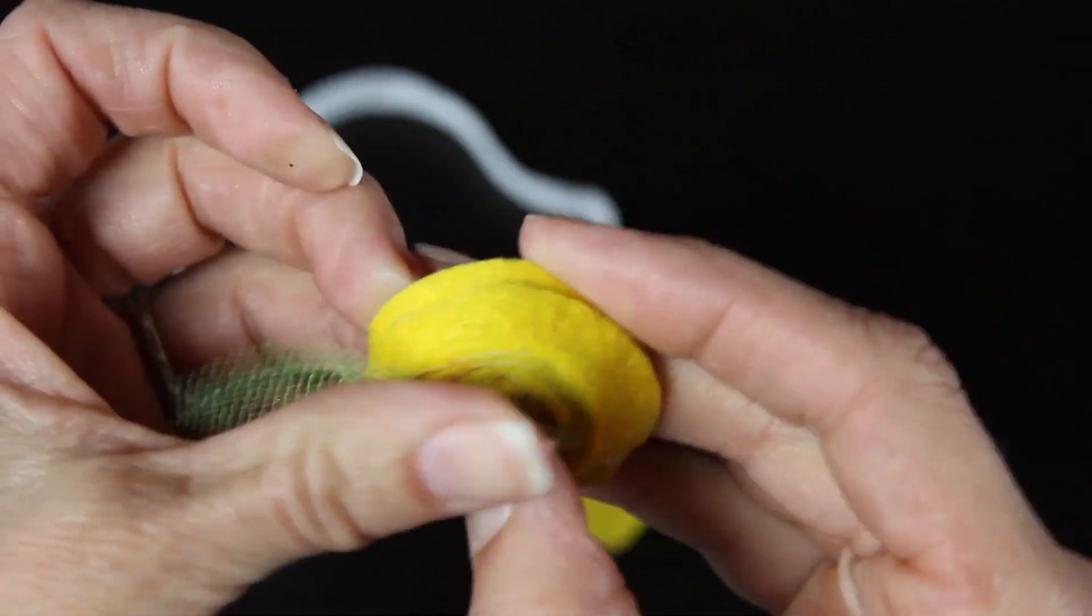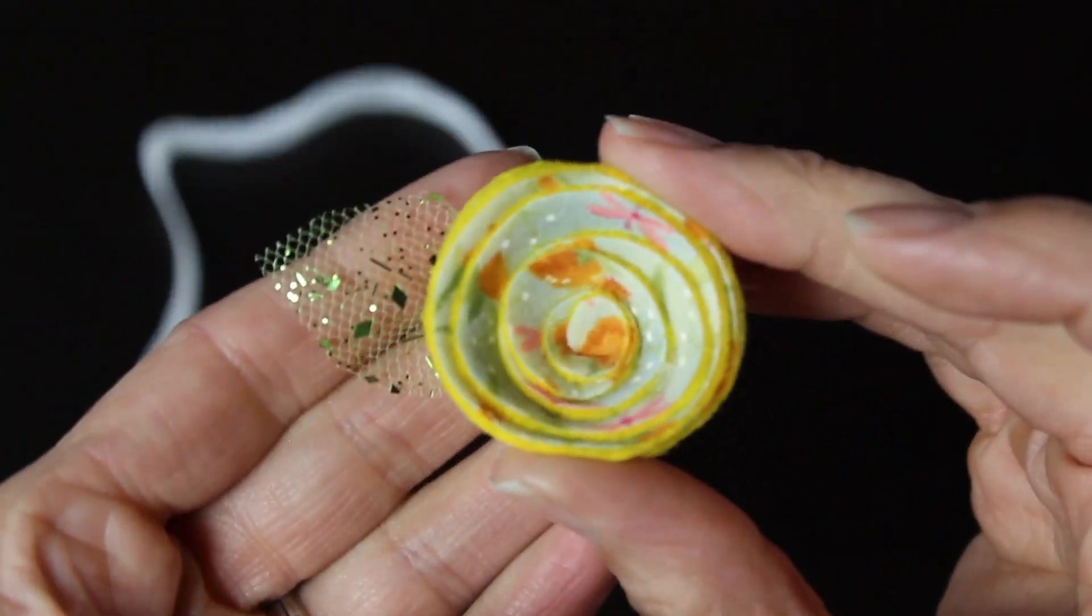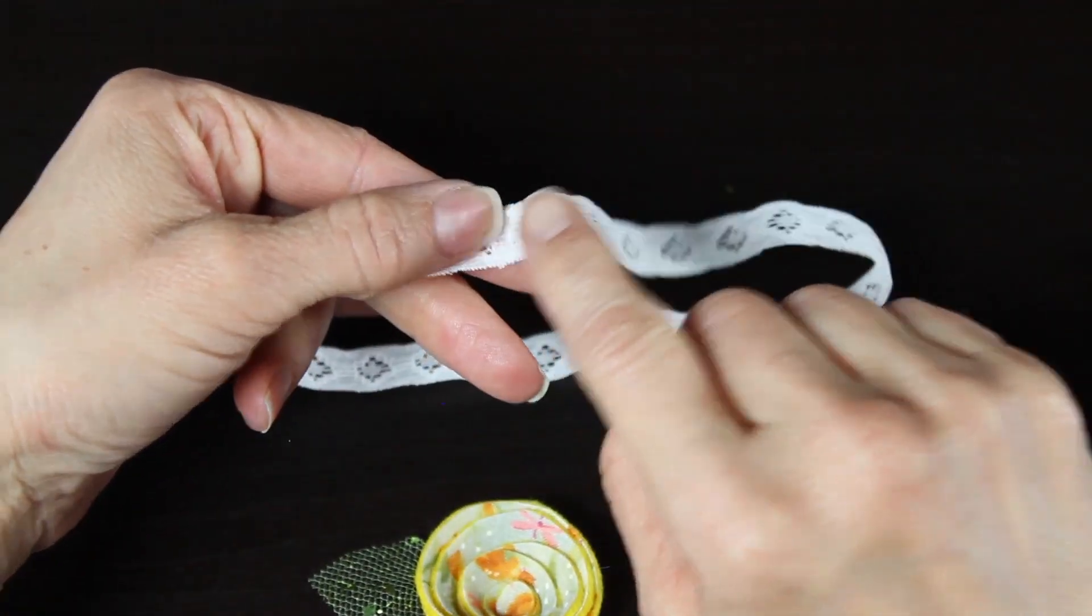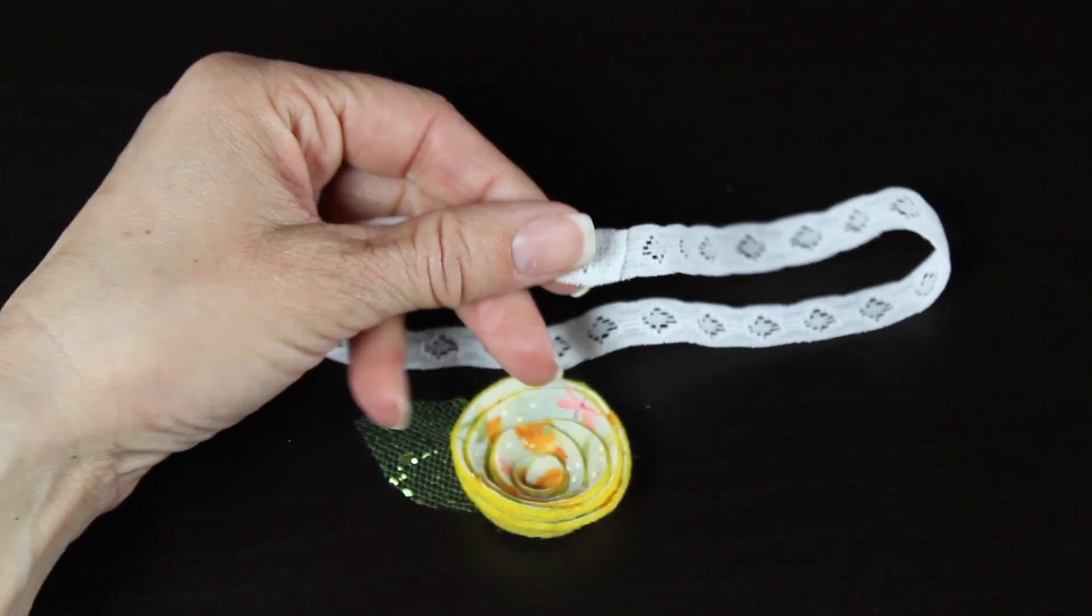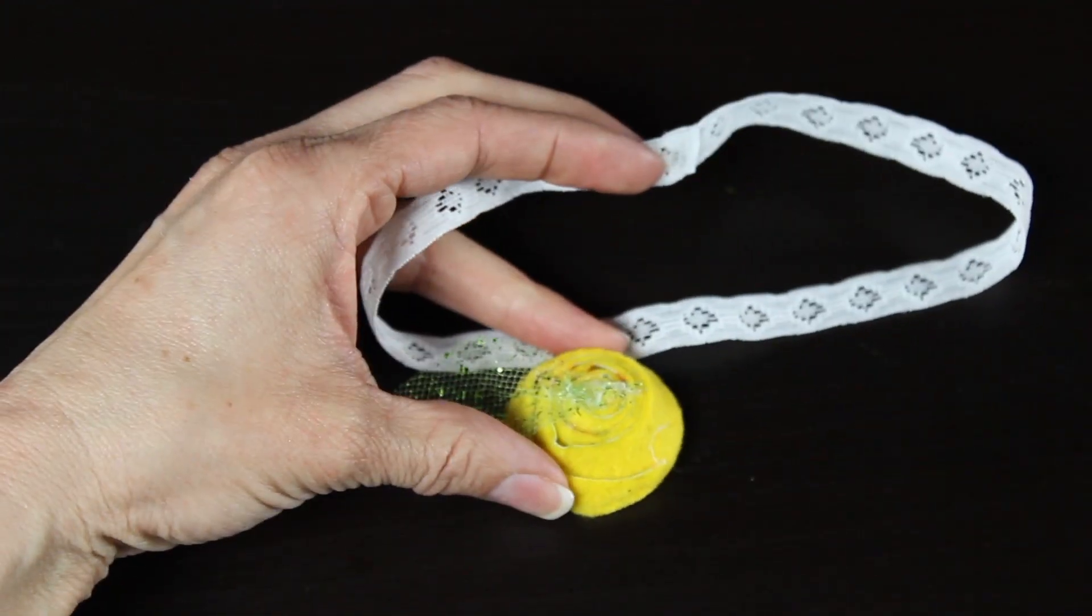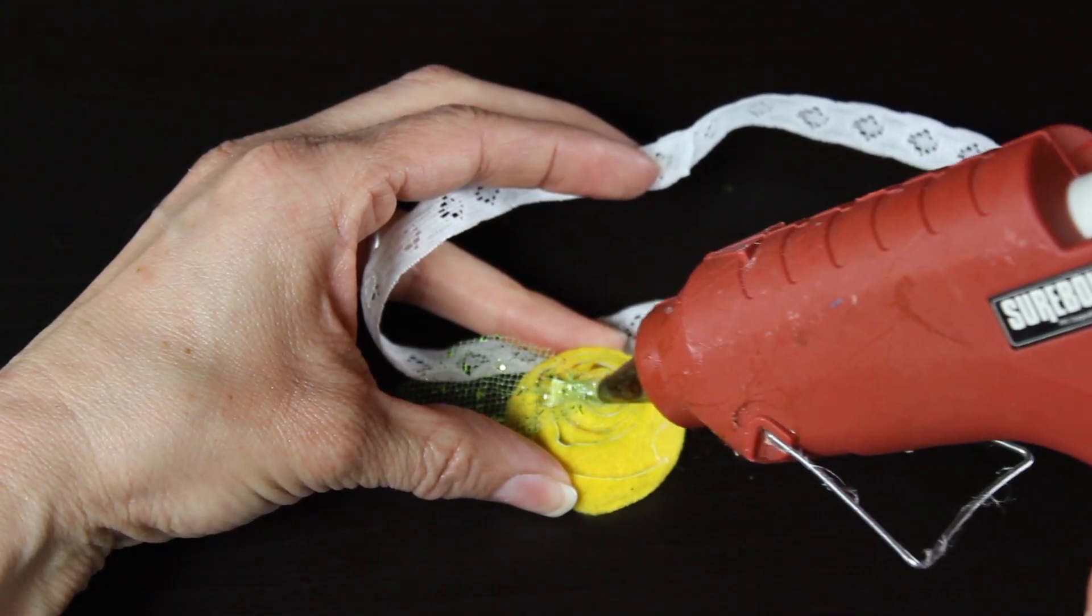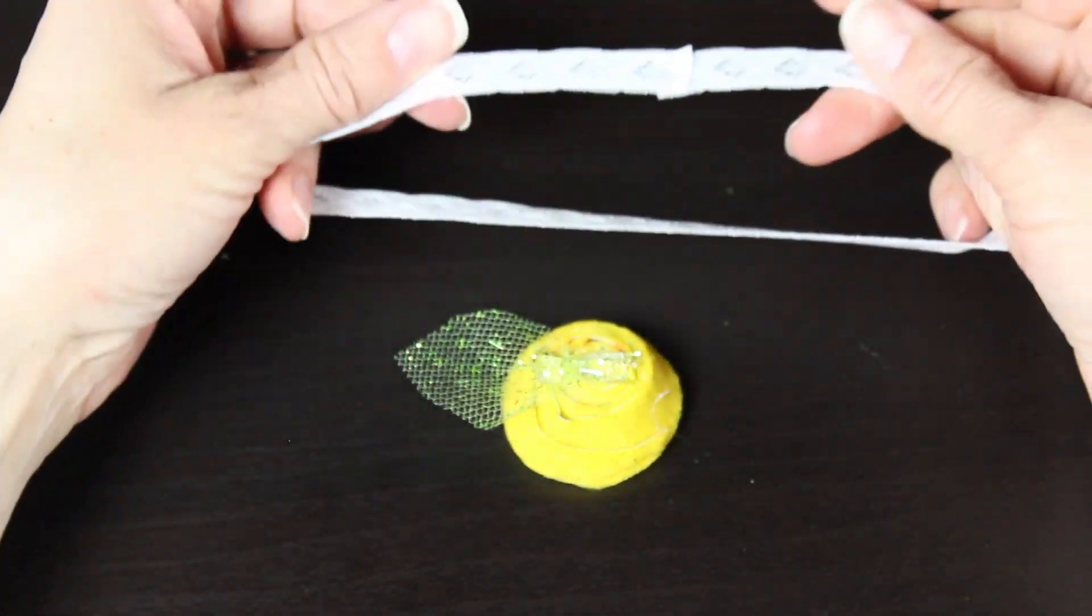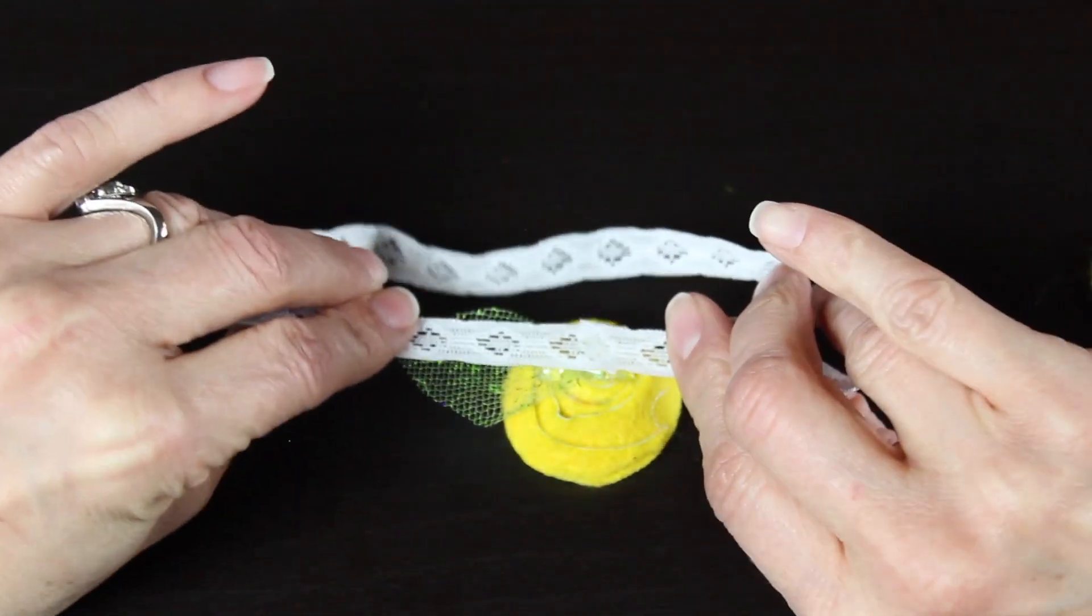And then right where you overlapped your lace, you're going to grab your flower, put a line of glue on the flower and then I actually take my lace and place that onto the glue and hold it down firmly so it sets. And that way you have your flower centered.